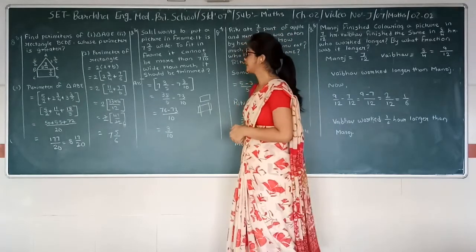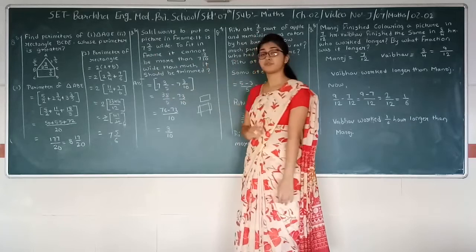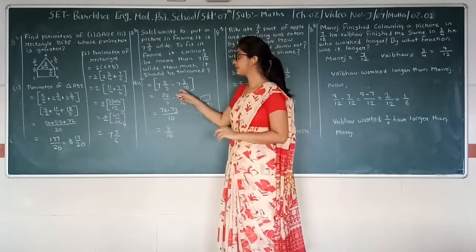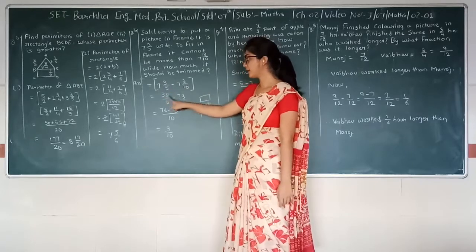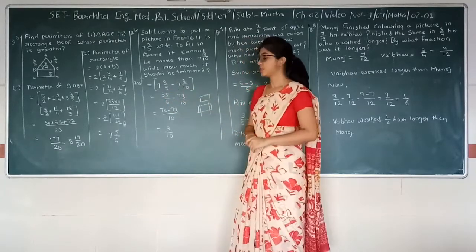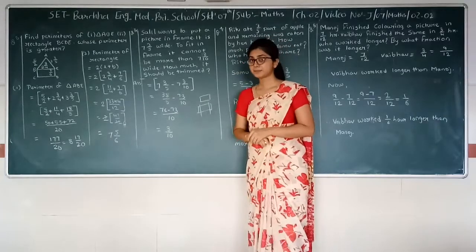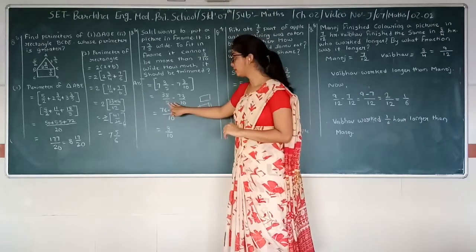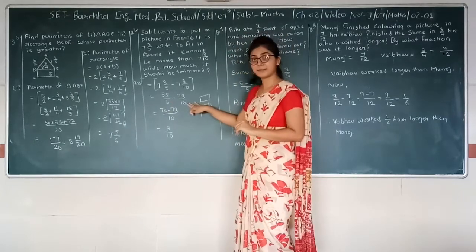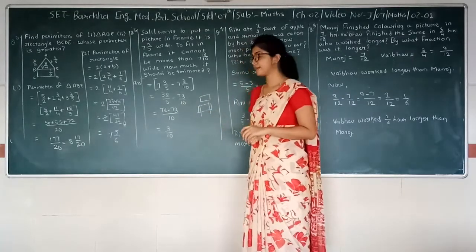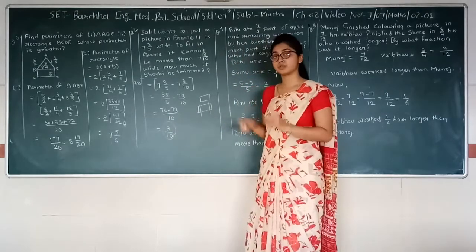So let's start. We will do subtraction for this. It says 7 integer 3 upon 5 minus 7 integer 3 upon 10. LCM of 5 and 10 will be 10. So 10 divided by 5 multiplied by 38 is equal to 76. And 10 divided by 10 multiplied by 73 is equal to 73. 76 minus 73 is equal to 3 upon 10. So this much we have to trim the picture.